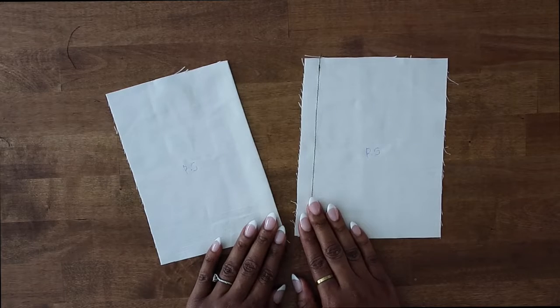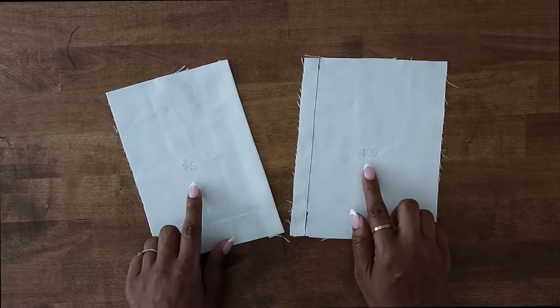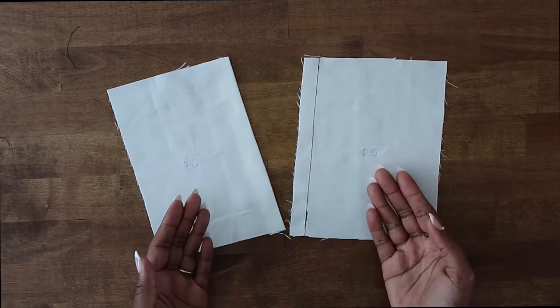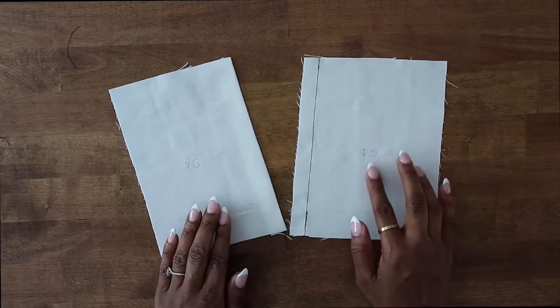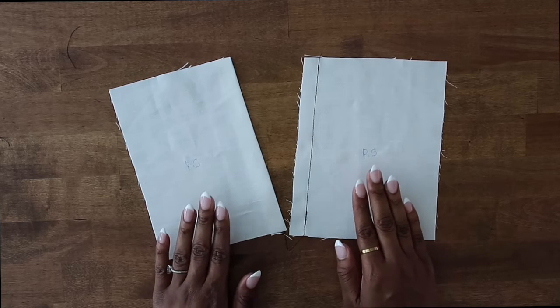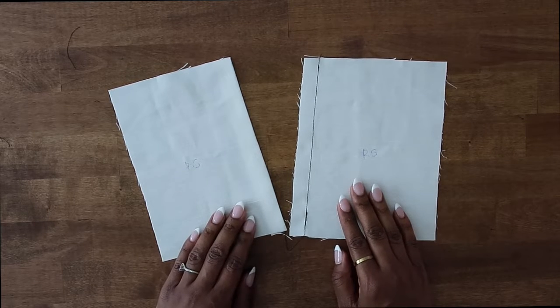To demonstrate a lapped seam, I will be using these two pieces of fabric here. I have both of the right sides of the fabric facing up, so whether you have a print or you have a solid that you've had to place a little mark on indicating which side is the right side, make sure that you have the right sides facing up.